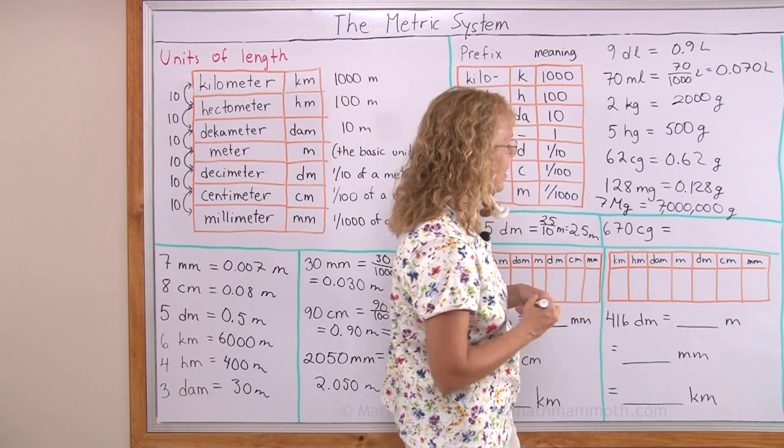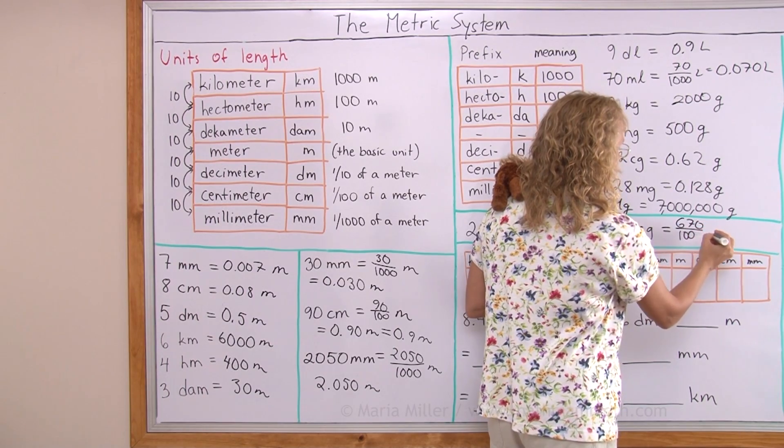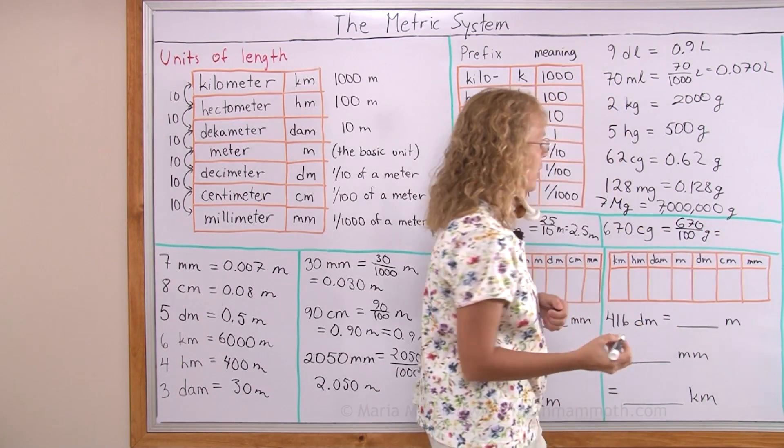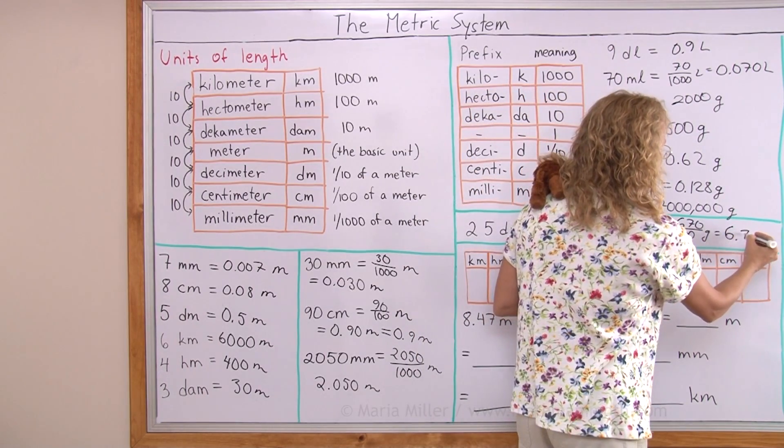Here, six hundred and seventy centigrams. Six hundred and seventy hundredths of a gram. This makes six whole grams, doesn't it? And then the point seventy after that: 6.70 grams.